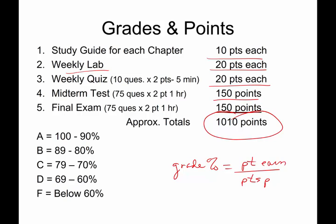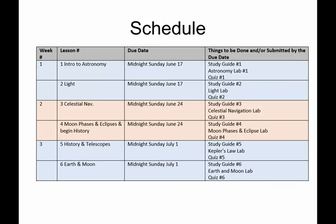The grading scale is a classic 90, 80, 70, 60 — A, B, C, D, F. Nothing too exotic or wacky there.